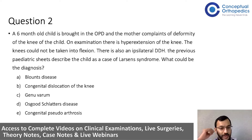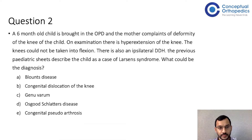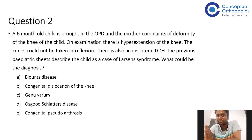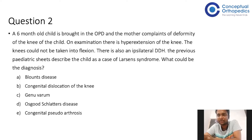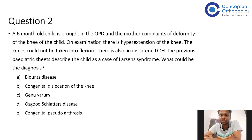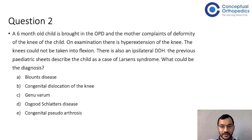Can you tell me the positive findings from the question that led you to that answer? The child presented with hyperextension of the knee and inability to flex the knee, which indicates the knee is dislocated. The child has Larsen syndrome, which is associated with ligament laxity. Since the child is six months old presenting to OPD, it is a congenital condition — congenital dislocation of the knee.